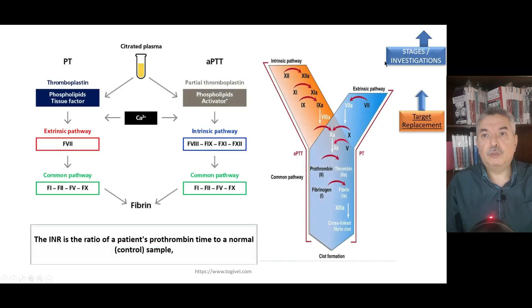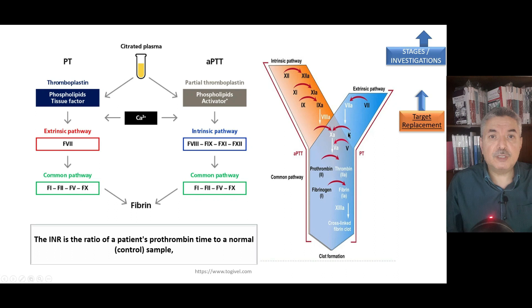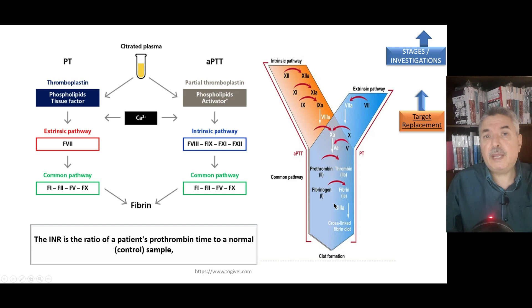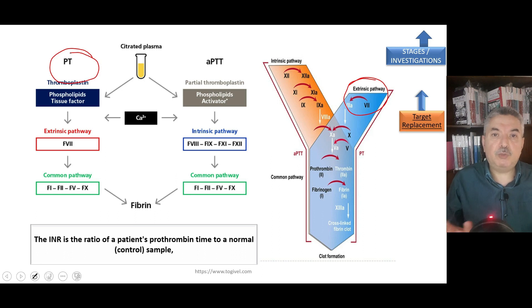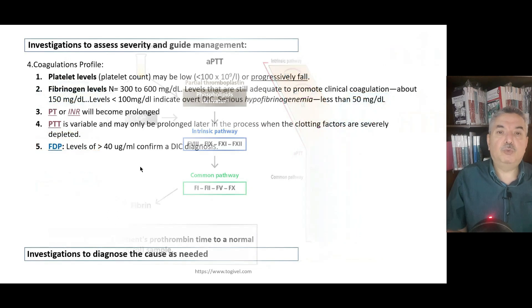PT and PTT assess the coagulation pathways. PT uses thromboplastin — tissue factor activates factor VII, initiating the extrinsic pathway. PTT uses partial thromboplastin, activating the intrinsic system. Both test the common pathway. In DIC due to thromboplastin release, PT is more valuable and becomes prolonged before the APTT. The INR is the ratio of the patient's prothrombin time to the control prothrombin time — it is unitless. PT/INR and PTT should be within normal limits or up to 1.5.